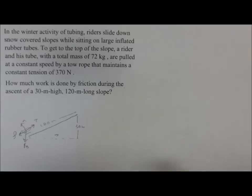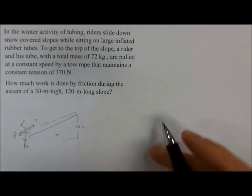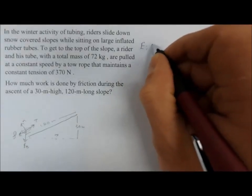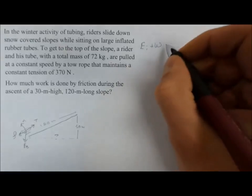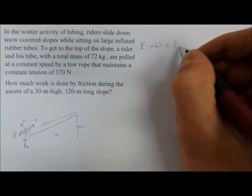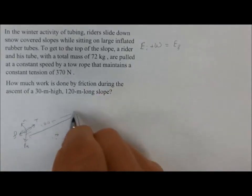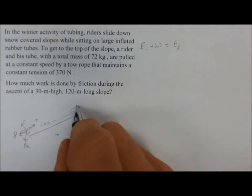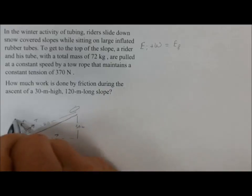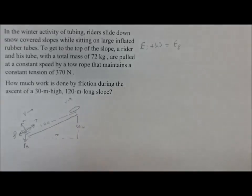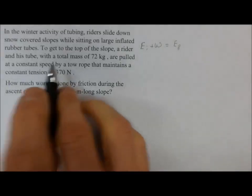If we set up the work energy equation, we'll start up here. We have that all the energy it has at the bottom there plus the work done on the way up will equal the energy that it has at the top. This is where it initially starts, and then it ends up up here. The velocity is constant. It has the same V the whole way up. Constant speed.